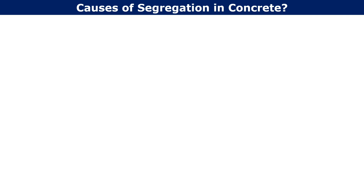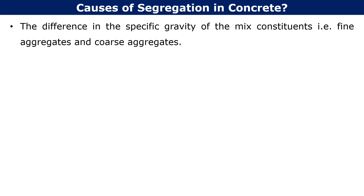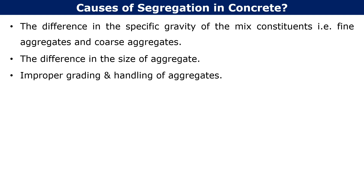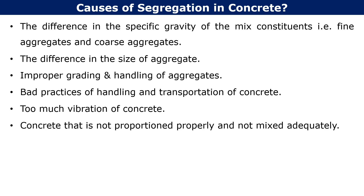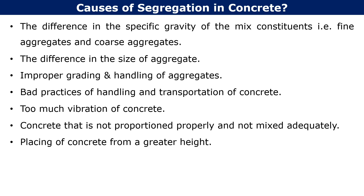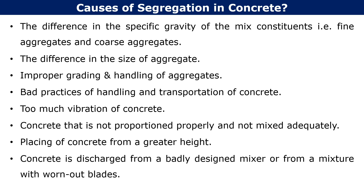The major causes of segregation in concrete are: the difference in the specific gravity of the mixed constituents, that is fine aggregate and coarse aggregates; difference in the size of aggregates, improper grading and handling of aggregates; bad practices of handling and transportation of concrete; too much vibration of concrete; concrete that is not proportioned properly and not mixed adequately; placing of concrete from a greater height; and concrete discharged from a badly designed mixer or from a mixer with worn out blades.